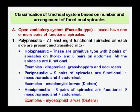The second type is peripneustic, where 9 pairs of spiracles are functional, meaning 1 pair — the mesothoracic spiracles — is closed. An example is some dipterans. Hemipneustic — hemi means something absent — means 8 pairs of spiracles are functional, and 2 spiracles become non-functional: the mesothoracic or abdominal spiracles. The best example is mitosophid larvae that come under the order Diptera.